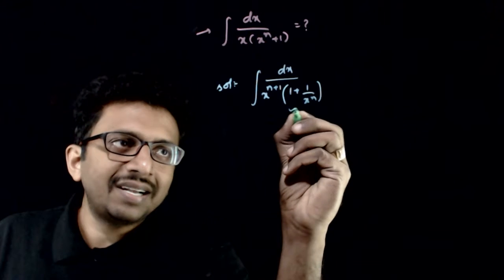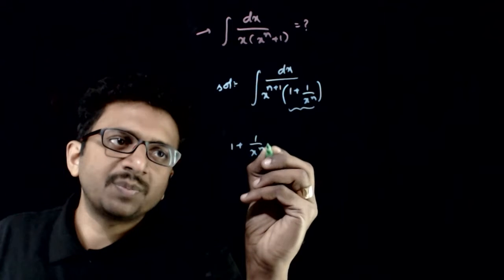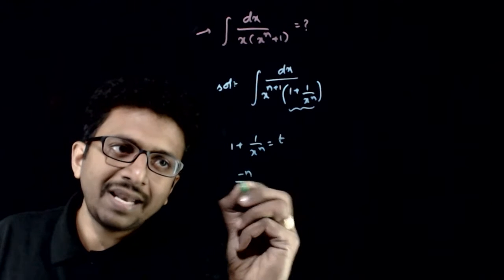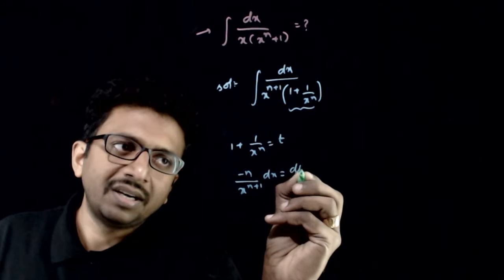Now what I do is, I will take this as my t. Let 1 plus 1 by x power n is equal to t. This implies minus n by x power n plus 1 dx is equal to dt.